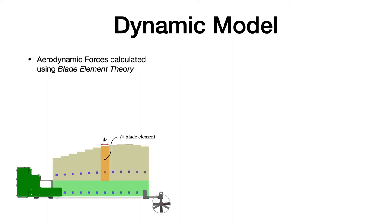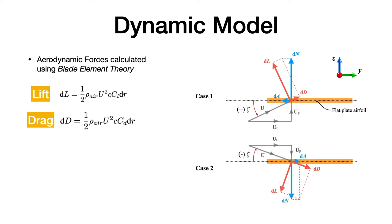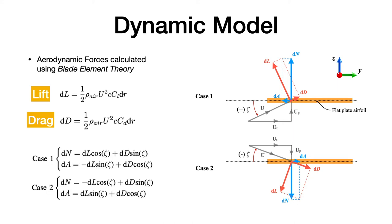In order to find the aerodynamic forces from the wing, we use blade element theory. It splits the wing into several small blade elements and calculates the lift and drag forces from each element. Since the wing is built from flat balsa and foam, we use flat plate airfoil to find the coefficients of lift and drag. The relative air velocity may come from above or below the blade element in dynamic situations. To cater for this, we have two cases when calculating the resolved normal and axial forces.